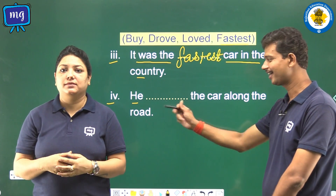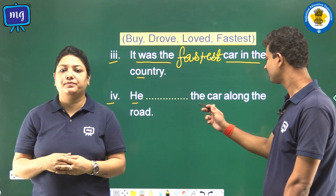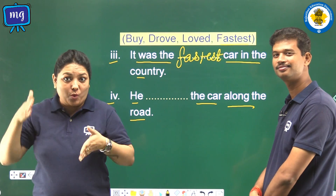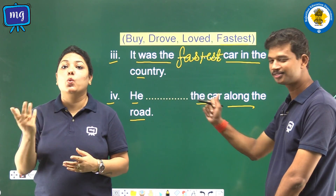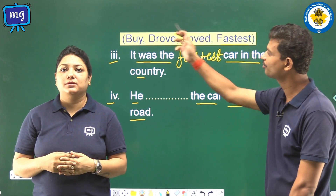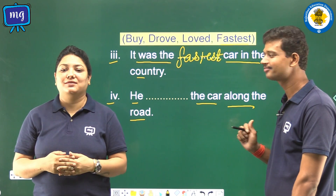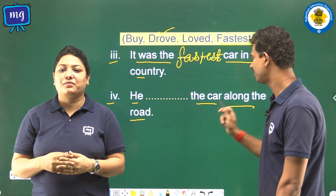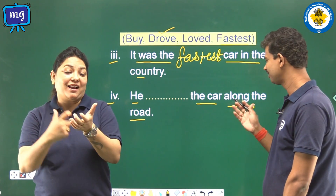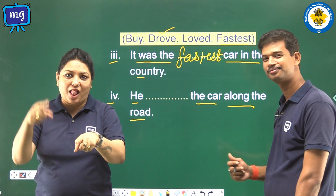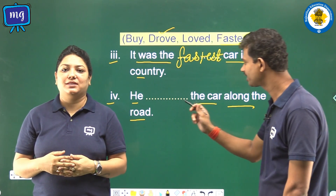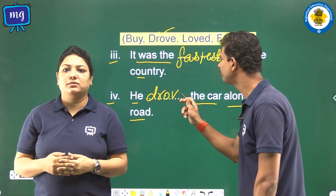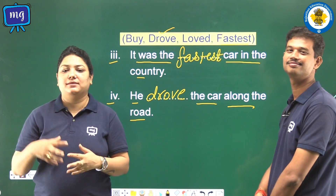Fourth: He dashed the car along the route. Choose from the box — he drove the car along the route. So we shall write 'drove' in the blank.